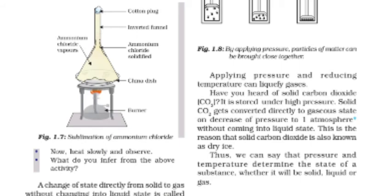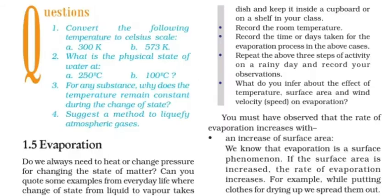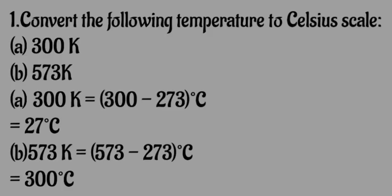Now let's convert temperatures to the Celsius scale. Convert 300 K: 300 minus 273 equals 27 degree Celsius.